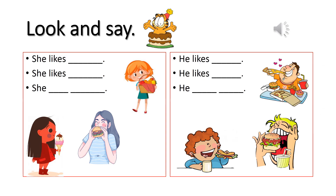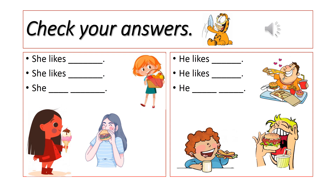Look at the pictures and make sentences with she likes or he likes. Check your answers with me. She likes apples. She likes ice cream. She likes burgers. He likes pizza. He likes hot dogs. He likes burgers.